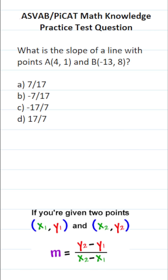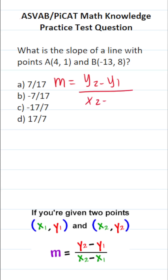This math knowledge practice test question for the ASVAB and PyCat says: what is the slope of a line with points A(4, 1) and B(-13, 8)? In order to calculate the slope M when you're given two points on a line, it's going to be Y2 minus Y1 over X2 minus X1.